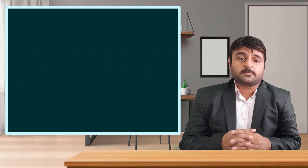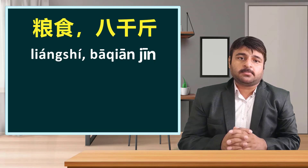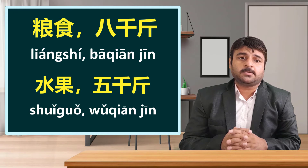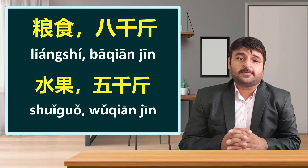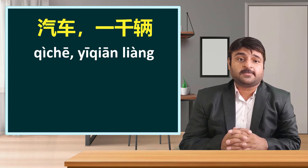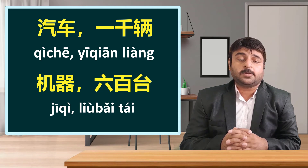This year the wheat output compared to previous year increased by 7,000 chin. Moving on to the words in the box: 'liang she' — grains — 8,000 chin; 'shuai guo' — fruits — 5,000 chin. The fruit output this year compared to previous year. Cars output increased by 1,000 units; machinery increased by 600 units compared to previous year.